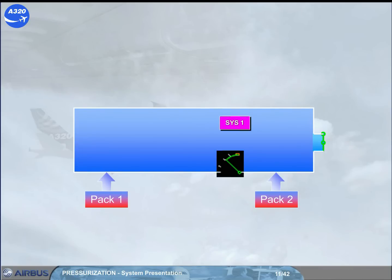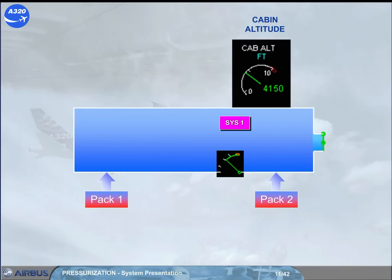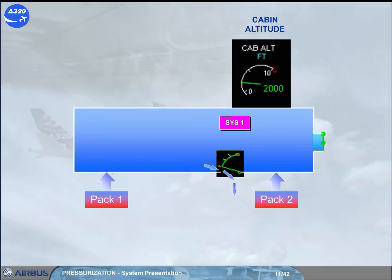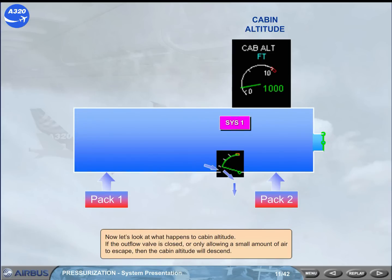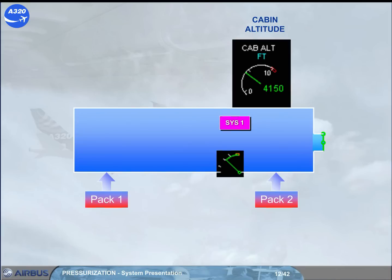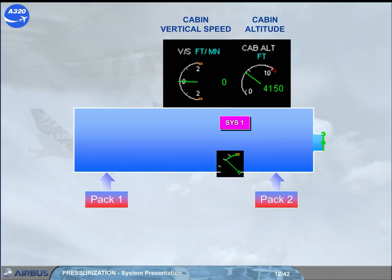Now let us look at what happens to cabin altitude. If the outflow valve is closed, or only allowing a small amount of air to escape, then the cabin altitude will descend. We can also see what the cabin is doing by reference to vertical speed. When the outflow valve closes, the cabin altitude will decrease — negative vertical speed.